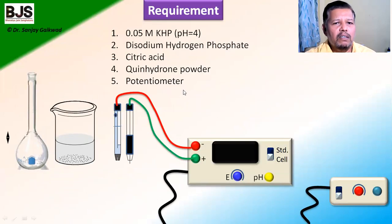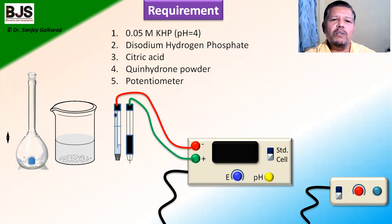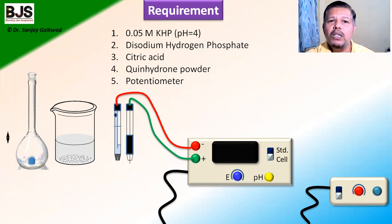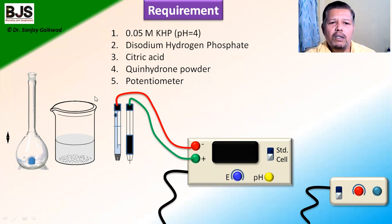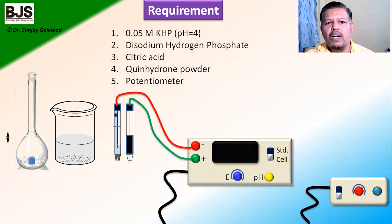For the determination of pH, we require solutions like 0.05 molar potassium hydrogen phthalate, disodium hydrogen phosphate, and citric acid. These two solutions are used to prepare different concentrations of buffer. We also need quinhydrone powder, a potentiometer, two electrodes — a calomel electrode and a platinum electrode — a magnetic stirrer, beaker, magnetic needle, and related apparatus.